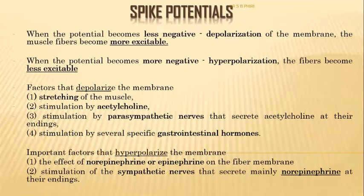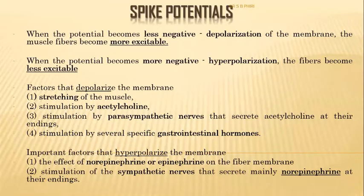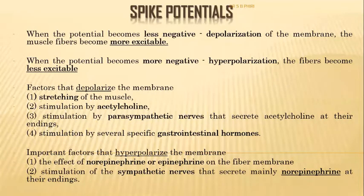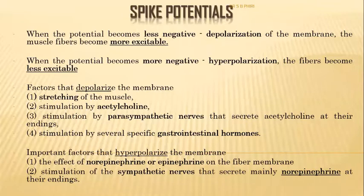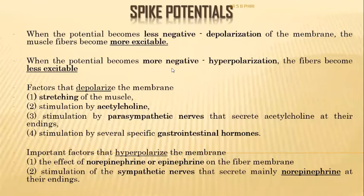Norepinephrine and epinephrine cause hyperpolarization of the cells; when hyperpolarized, the cells become less excitable and cannot easily fire action potentials. That is why the sympathetics slow down the function of the GIT - at their nerve endings they release epinephrine and norepinephrine, causing hyperpolarization and reducing excitability.